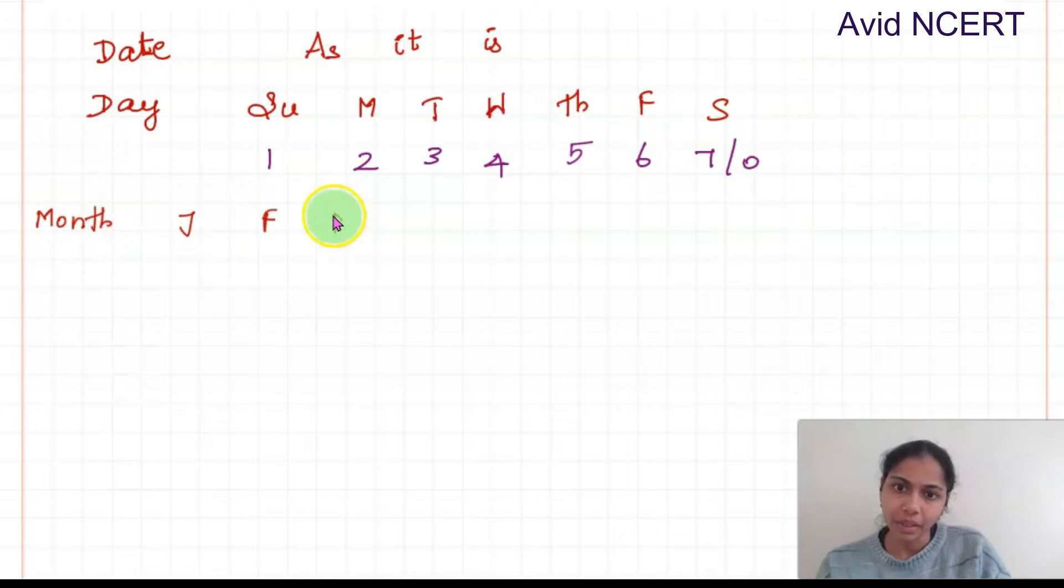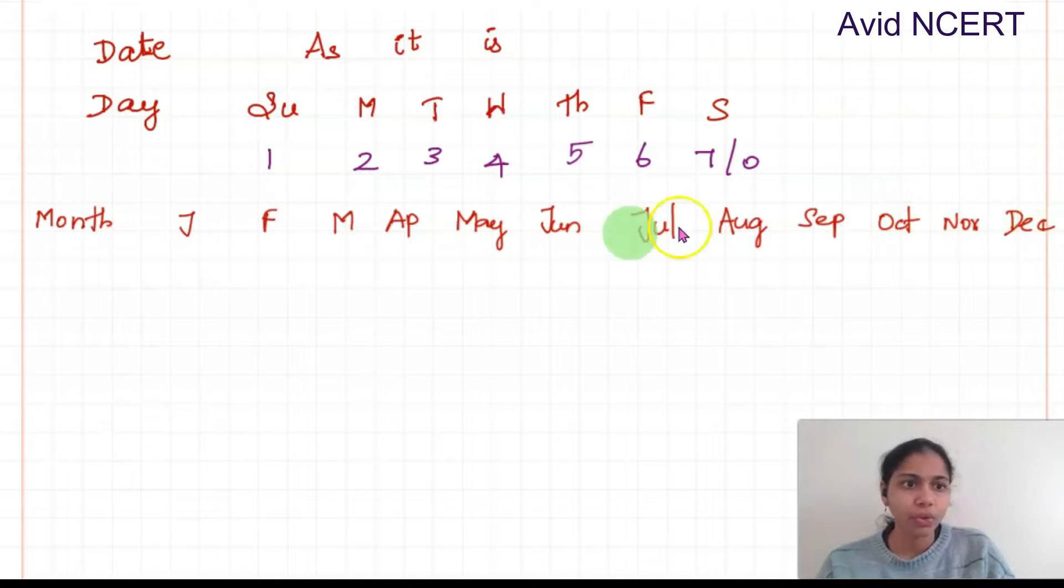For the month, January, February, March, April, May, June, July, August, September, October, November, December. So the code goes like this.